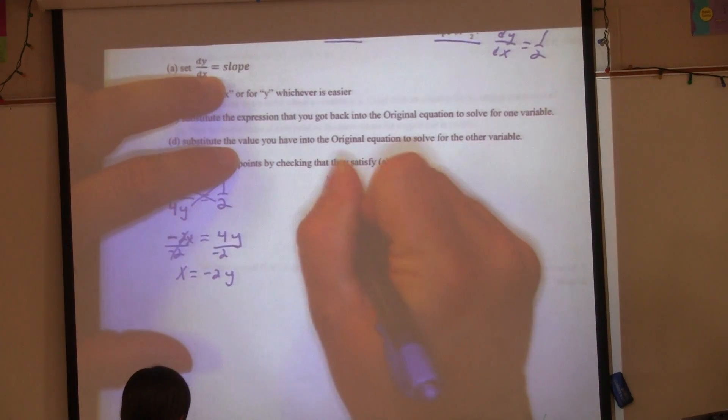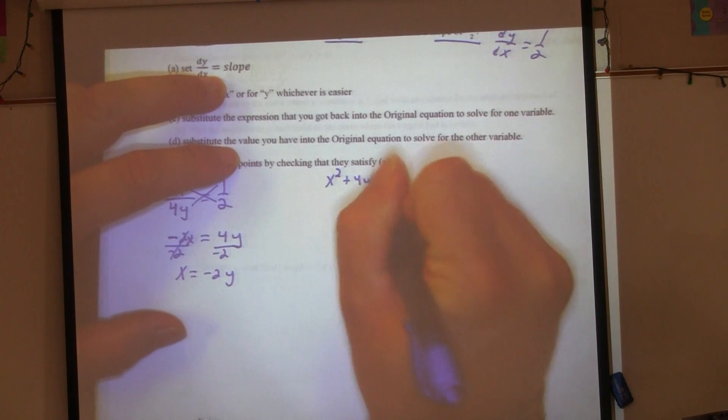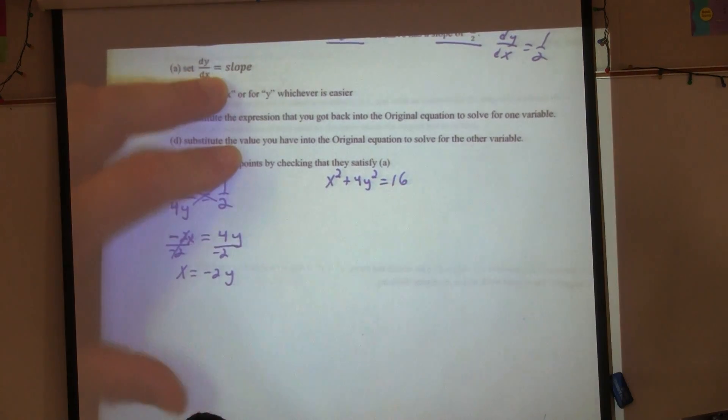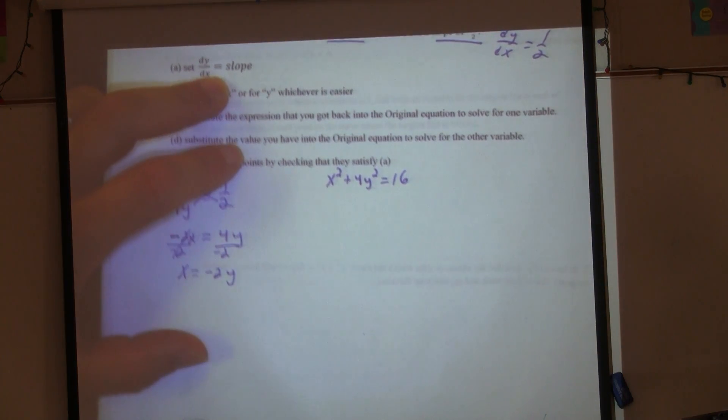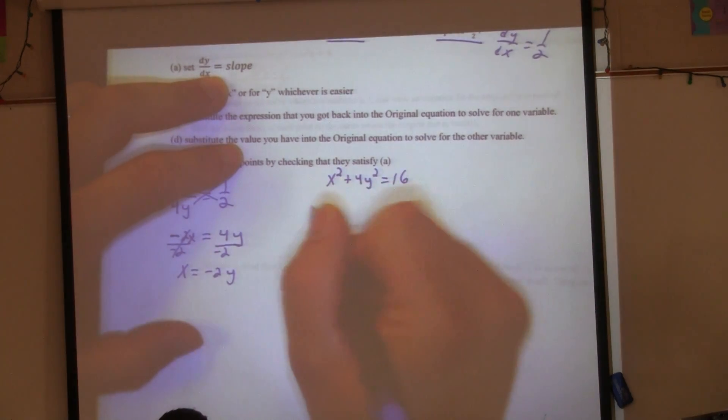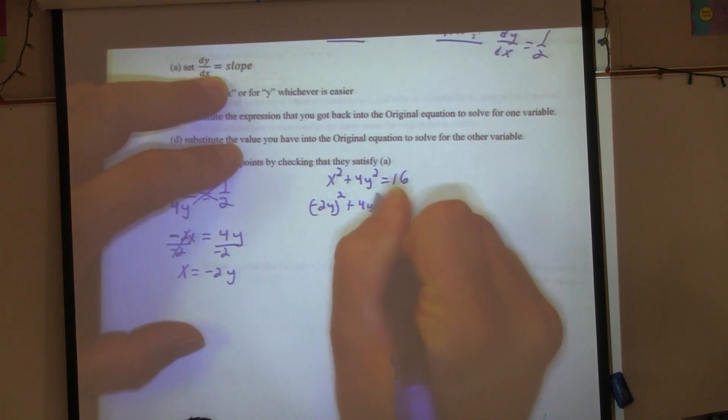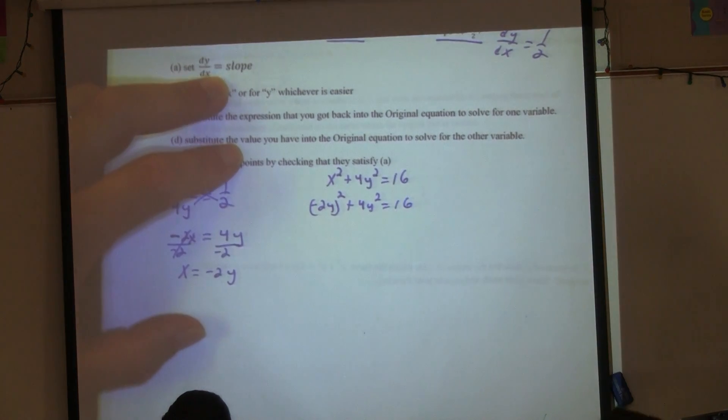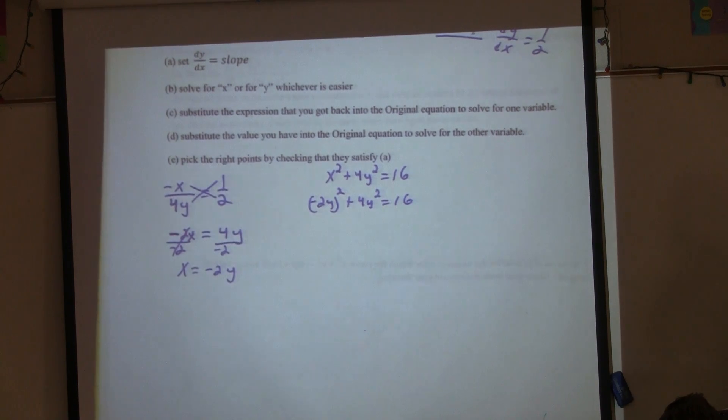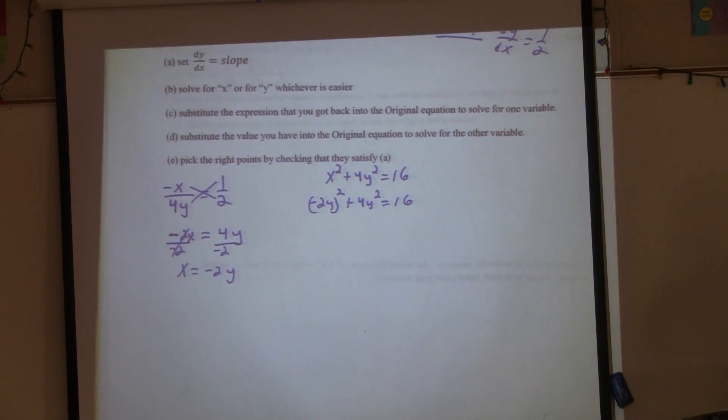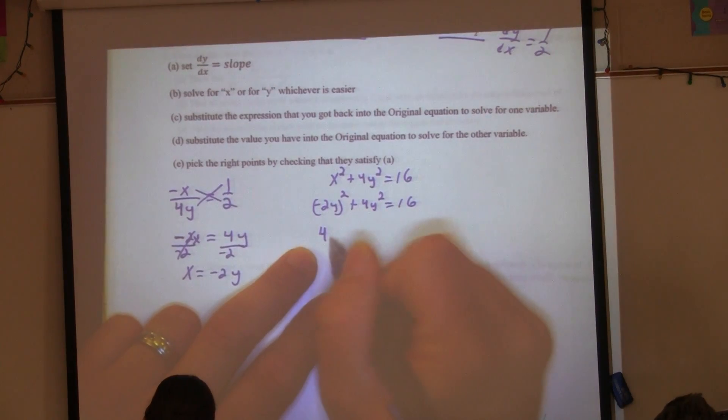So we're going to have X² + 4Y² = 16. That was the equation. And we're going to replace the X. This will be (-2Y)² + 4Y² = 16. Now be careful here. What's -2Y times -2Y?